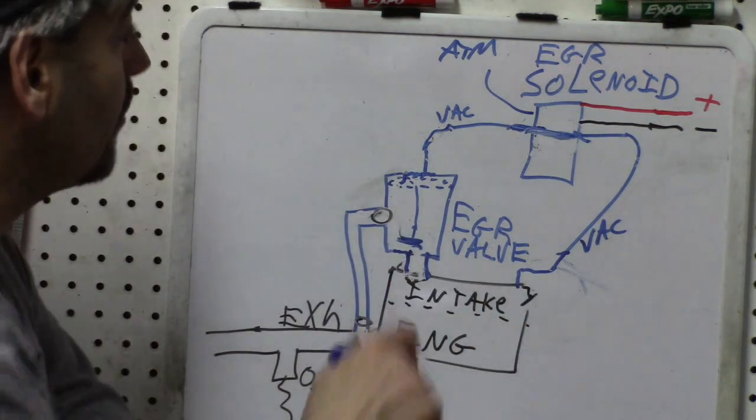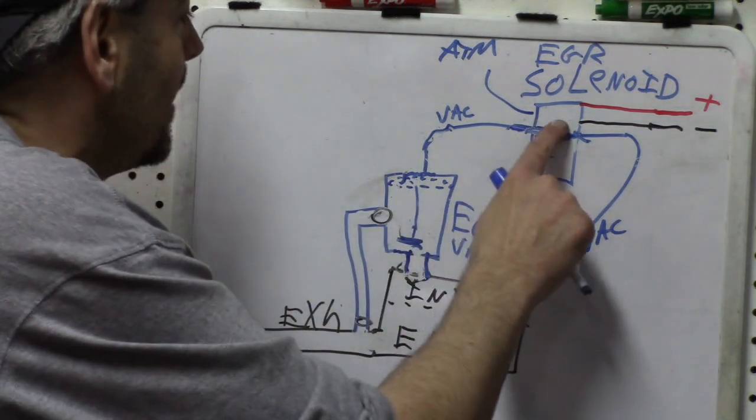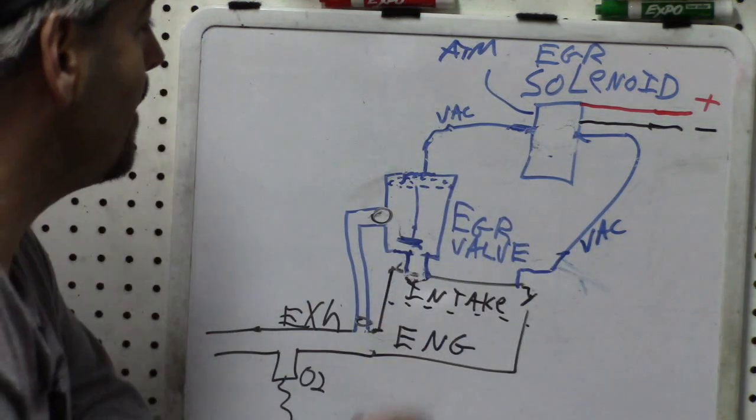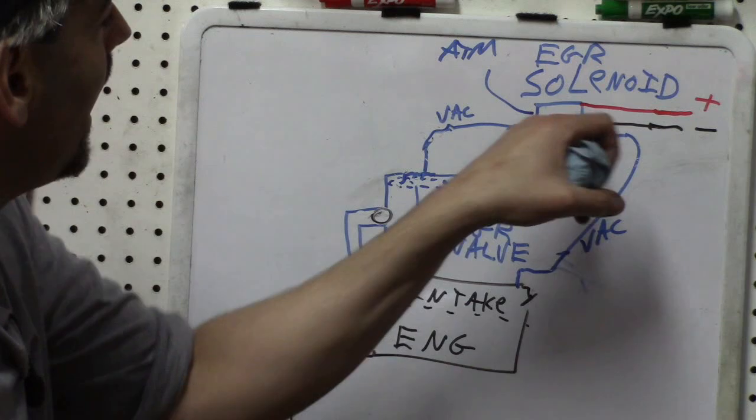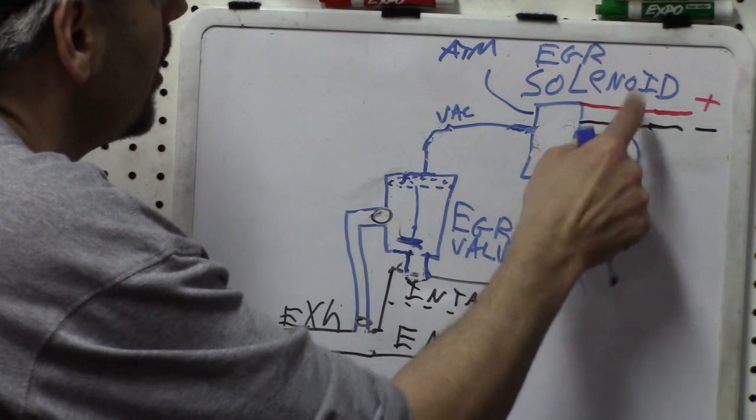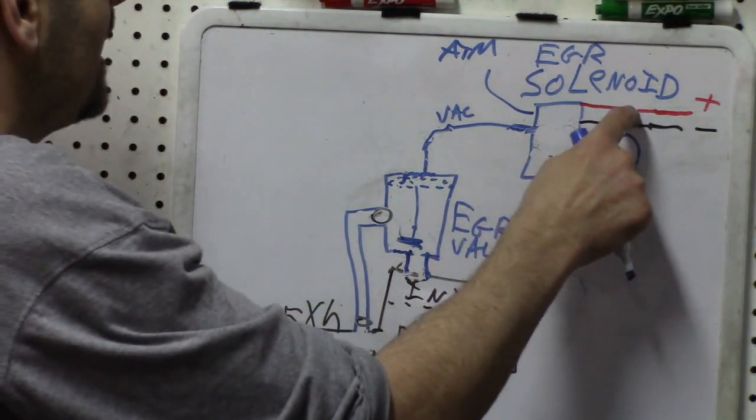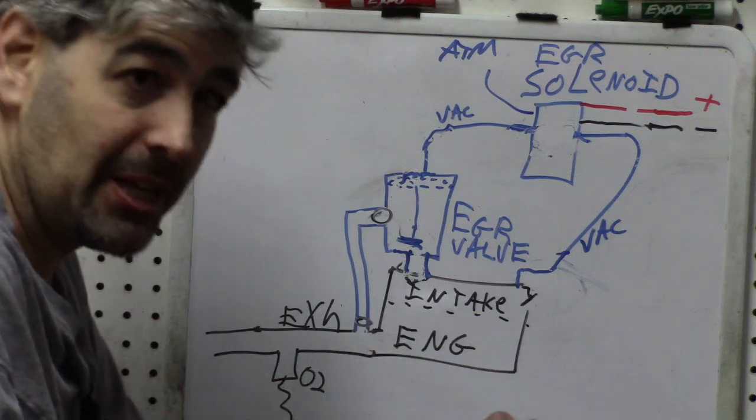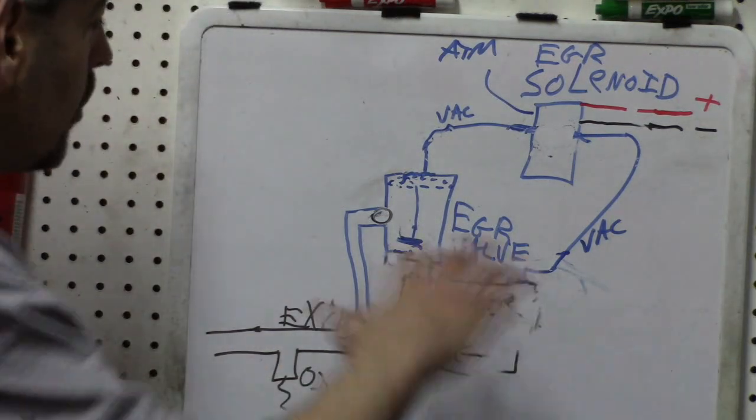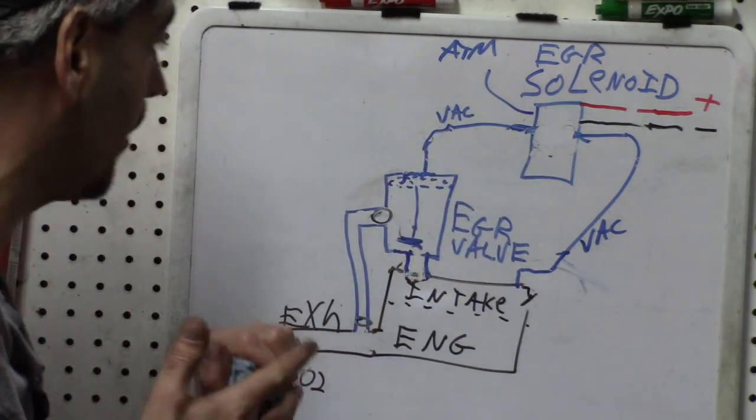Obviously, it goes without saying, a problem with the EGR solenoid not opening and closing. That would be a big problem. And of course, any problem where you do not have command to the solenoid because of an open or a short to ground or something like that, anything with the electrical, possibly even a computer problem. So those are your variables. And I will show you how to test for every single one of those things. And we'll do that on the actual car.